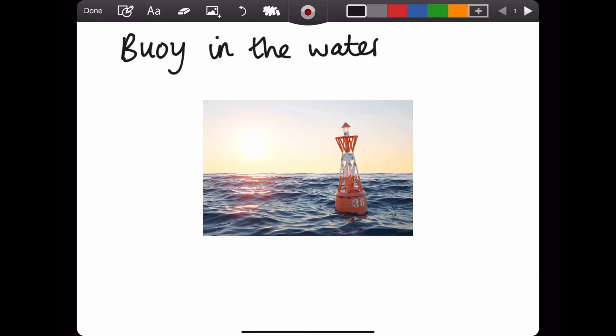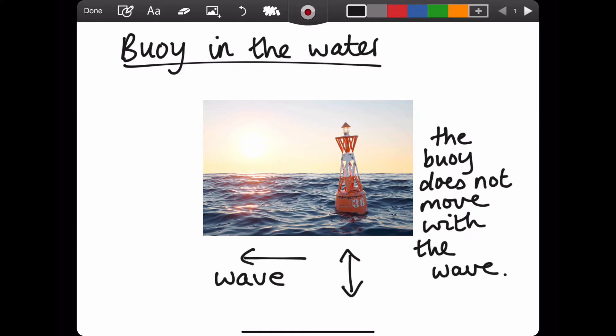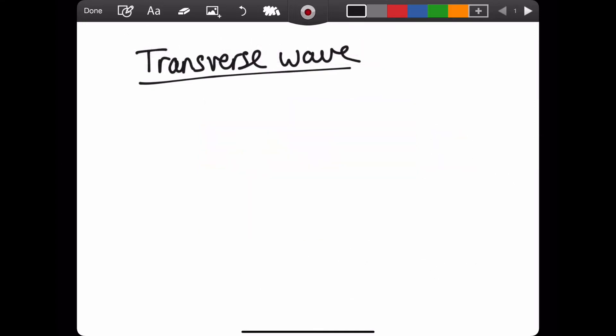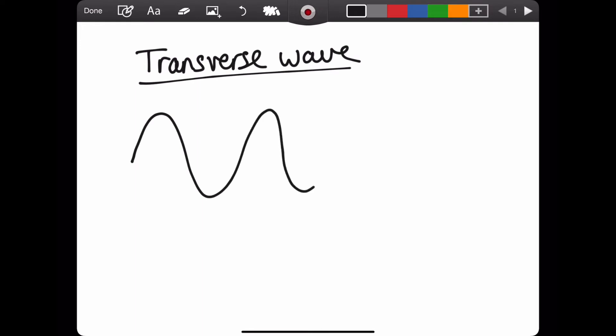As an example, if you think about a buoy floating on the surface of the water, when the water waves past the buoy, the buoy will move up and down. However, the buoy will not be transported into the shoreline. It will not move in the direction of the wave travel. This is an example of a transverse wave.